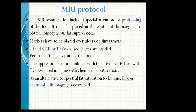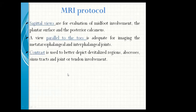MRI protocol. The MRI examination includes special attention for positioning of the foot. It must be placed in the center of the magnet to obtain homogeneous fat suppression. Markers have to be placed over the ulcer or sinus tract. T1 and STIR or T2 fat-sat sequences are needed because of the curvature of the foot. Fat suppression is more uniform with the use of STIR than with T2-weighted imaging with chemical fat saturation. As an alternative to spectral fat saturation technique, Dixon chemical shift imaging is described.